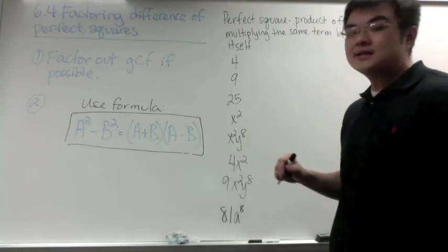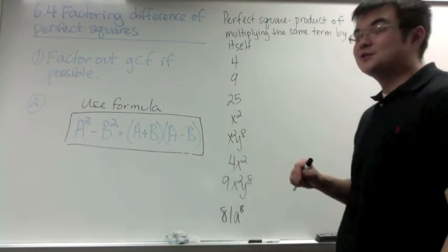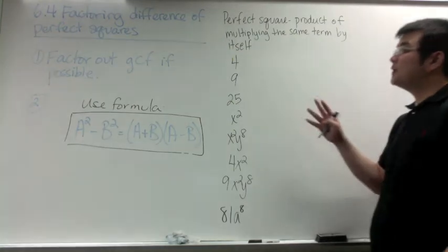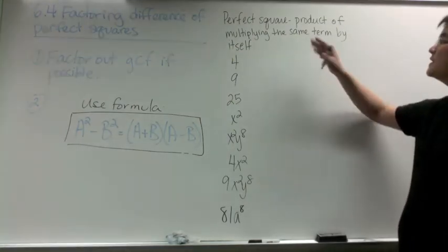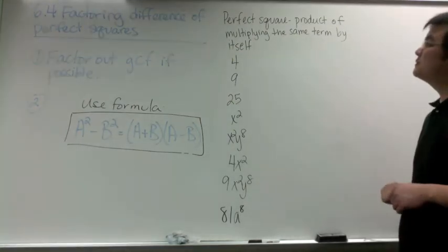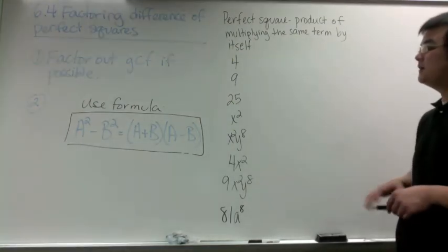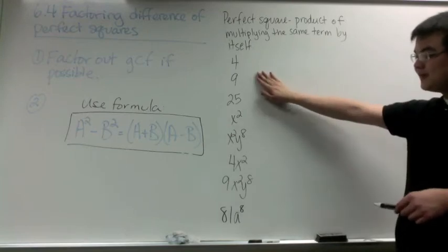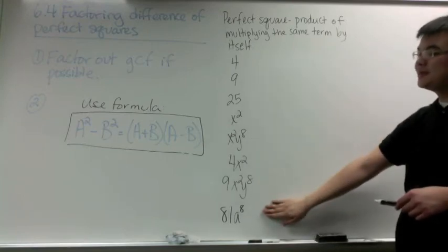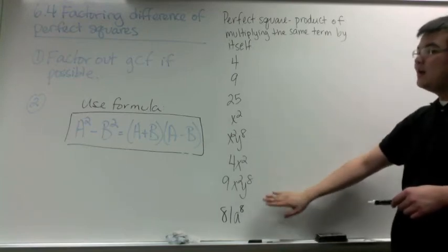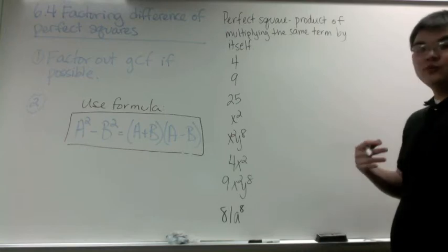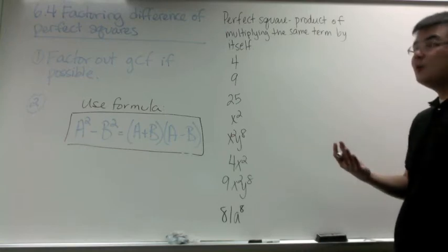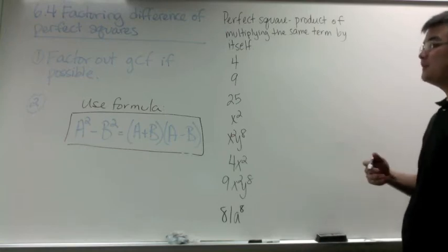Before we get to examples of factoring difference of perfect squares, let's talk about what a perfect square is. A perfect square is a product of multiplying the same term by itself. I've listed some perfect squares and I'll go over the reason why each one is a perfect square.